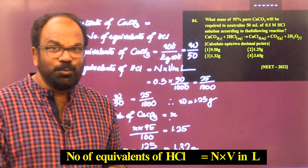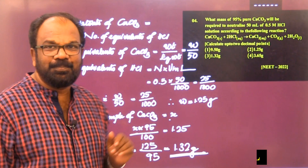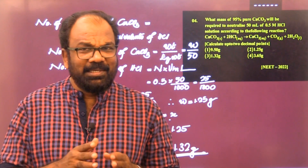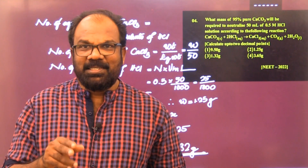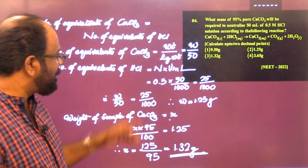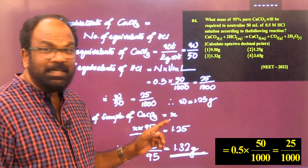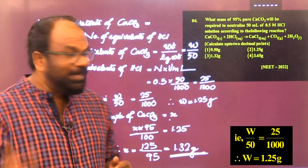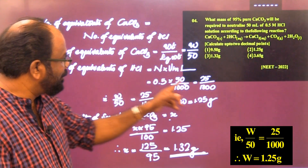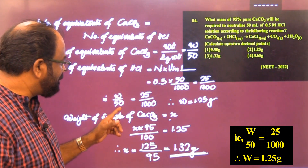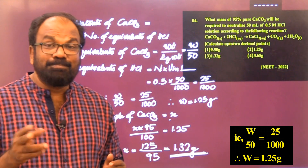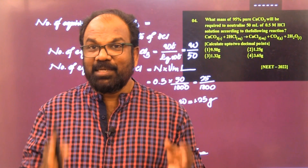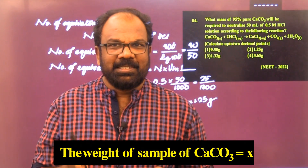Number of equivalents of HCl = normality × volume (in L). Since the basicity of HCl = 1, molarity equals normality = 0.5. So equivalents of HCl = 0.5 × (50/1000) = 25/1000. Equating: W/50 = 25/1000, so the weight of pure CaCO₃ required, W = 1.25 g.